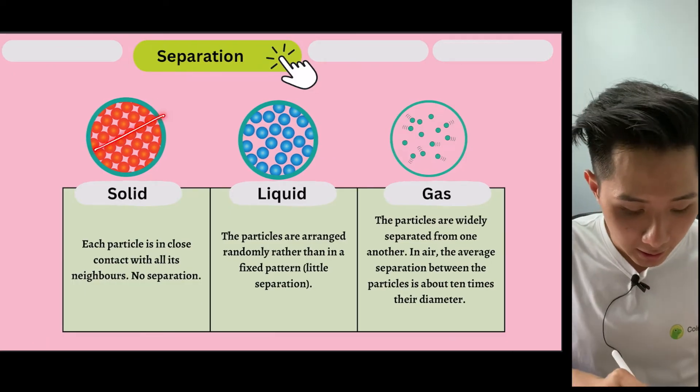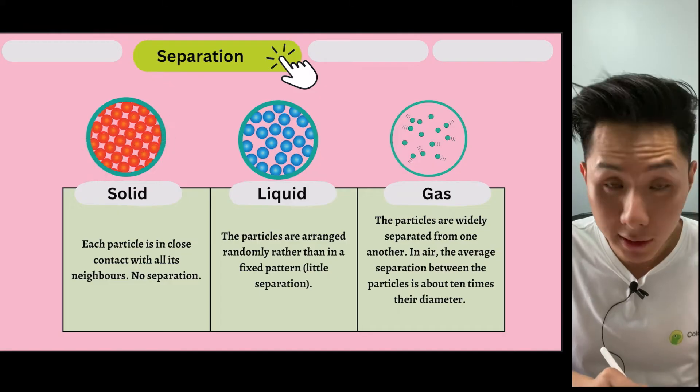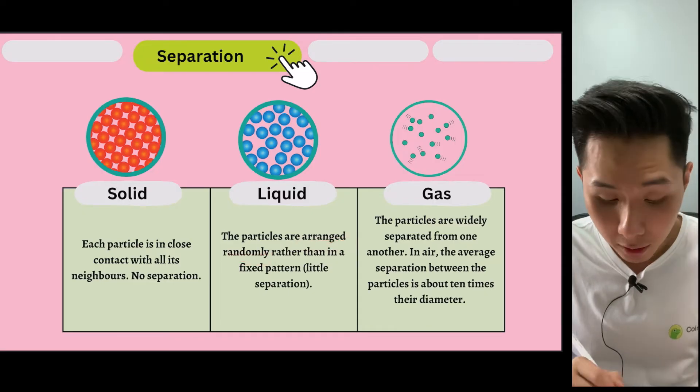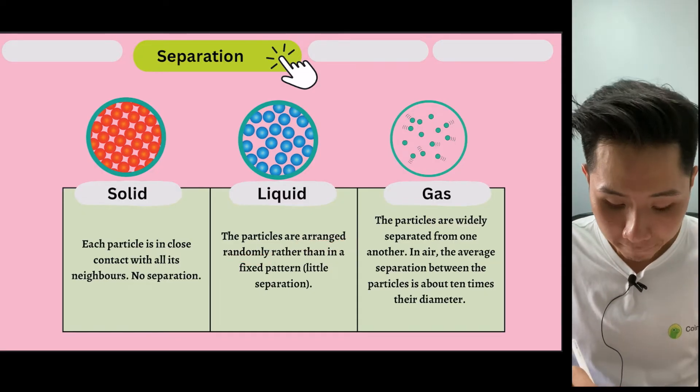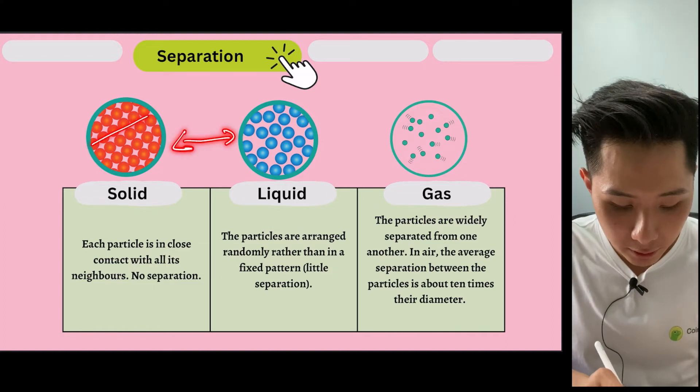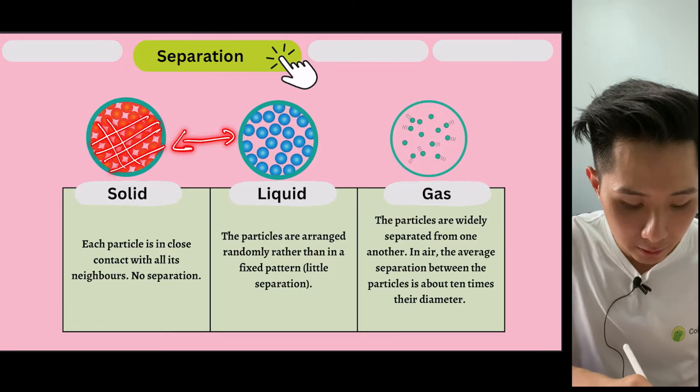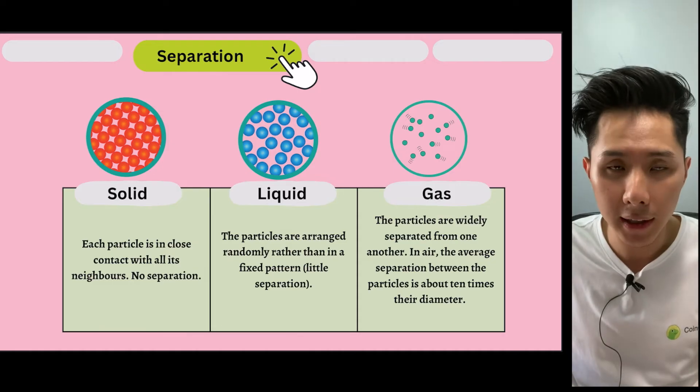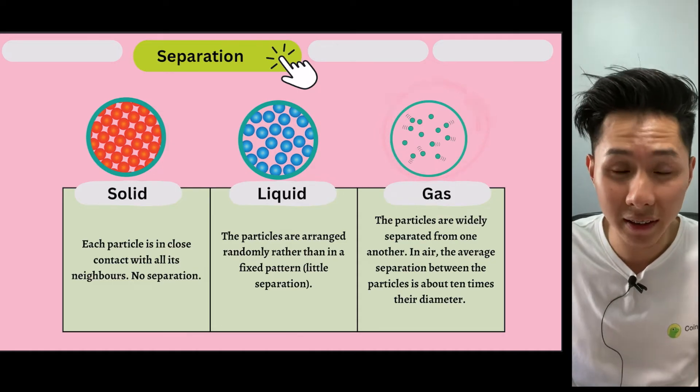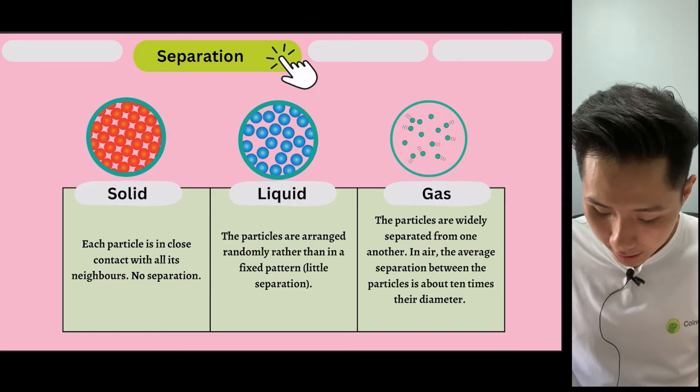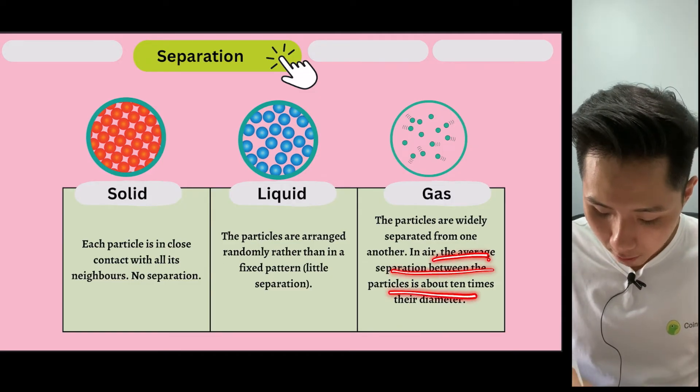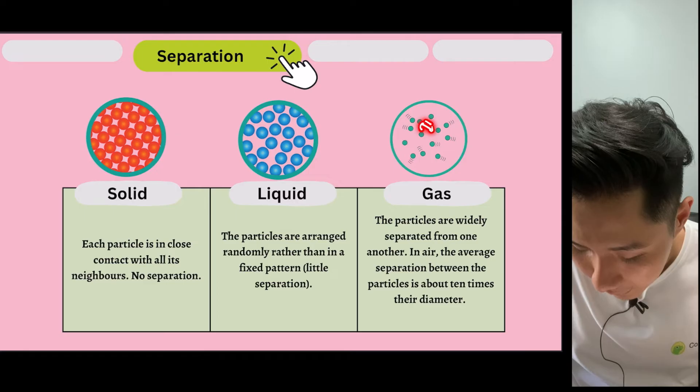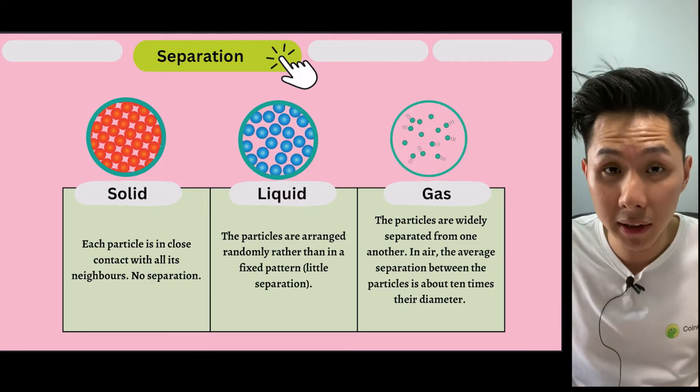And as for separation, you can see that for solid, because they are closely packed, they are not separated at all. Whereas liquid, they are also separated, but not a lot. If you compare them, you will see that solid is arranged in a pretty good order, whereas in liquid the order is random. And for gas, as they are not packed at all, they are very separated. And the average separation between the particles is about 10 times their diameter.